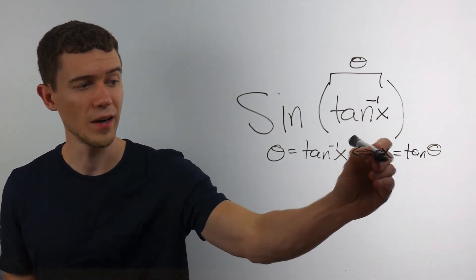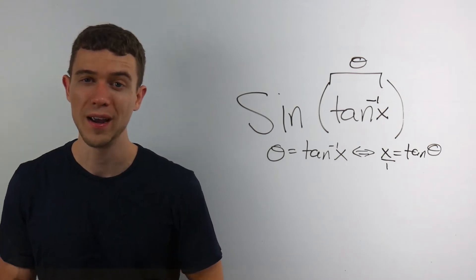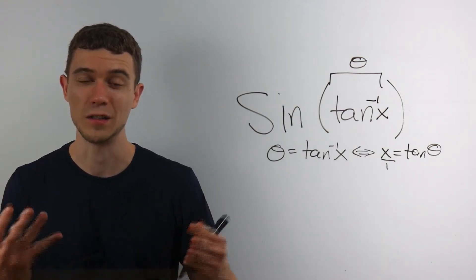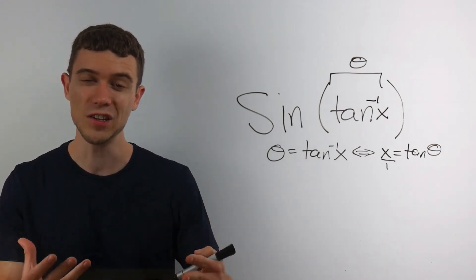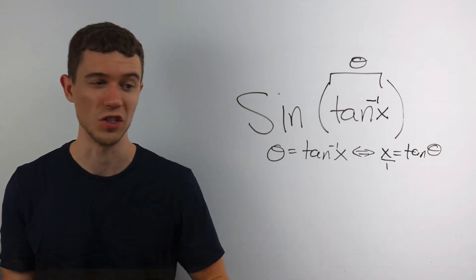For simplicity here, I'll write x as x over 1. And the reason I wrote it like that is because SOH CAH TOA, tangent is opposite over adjacent.